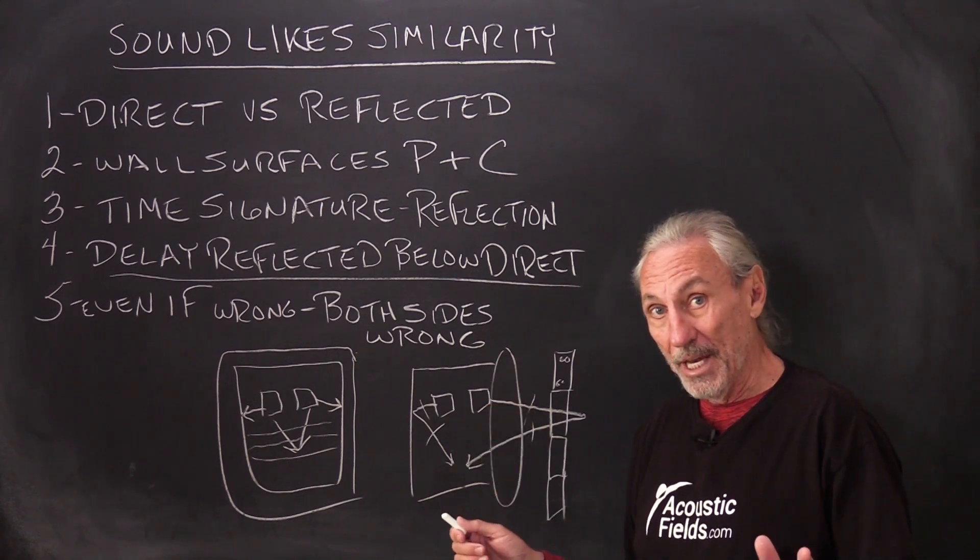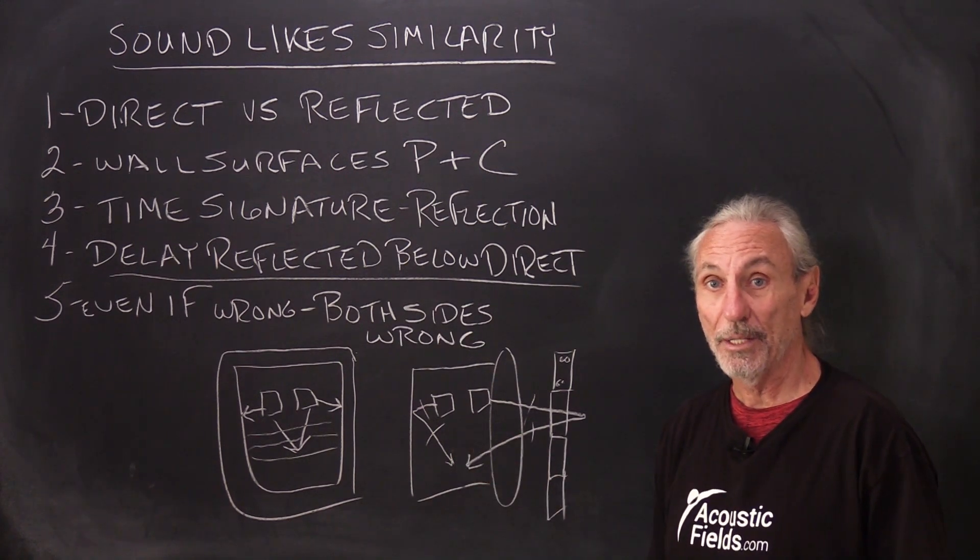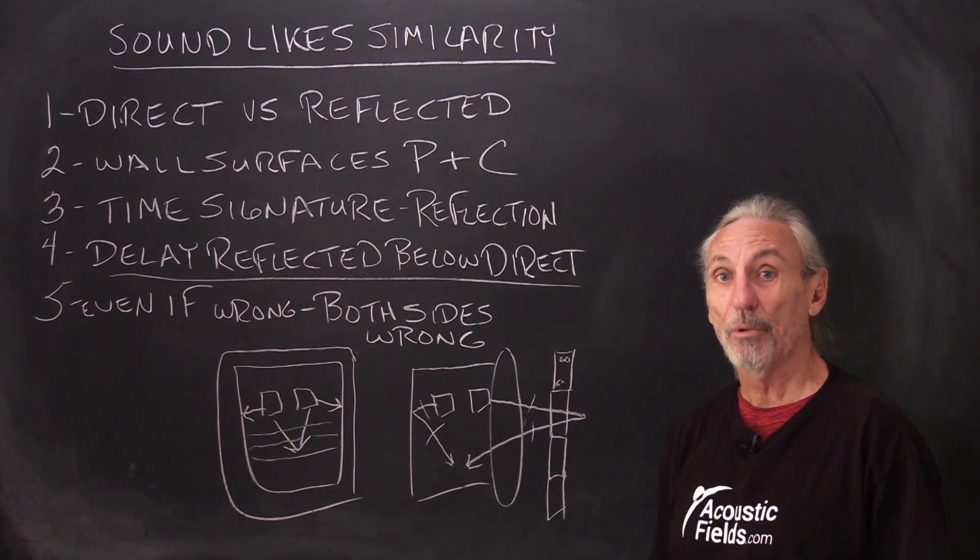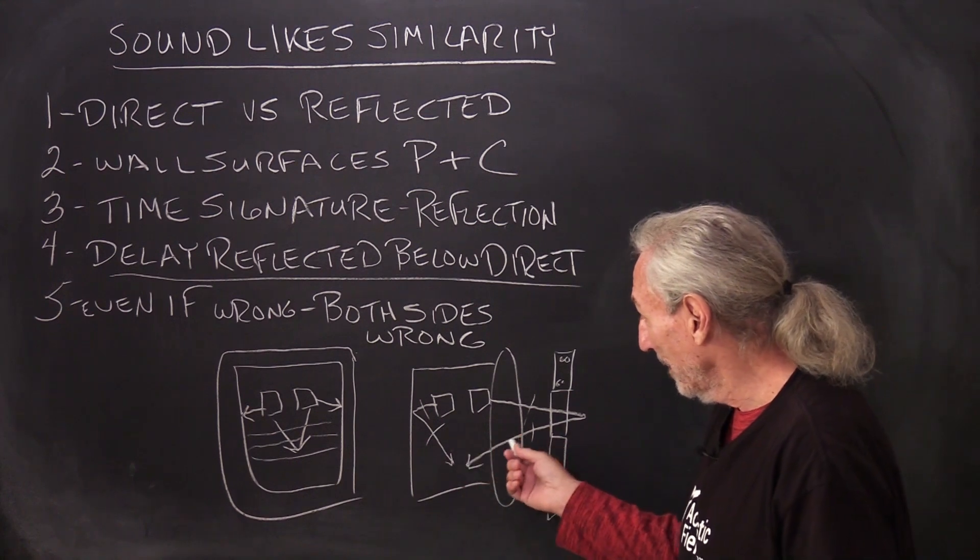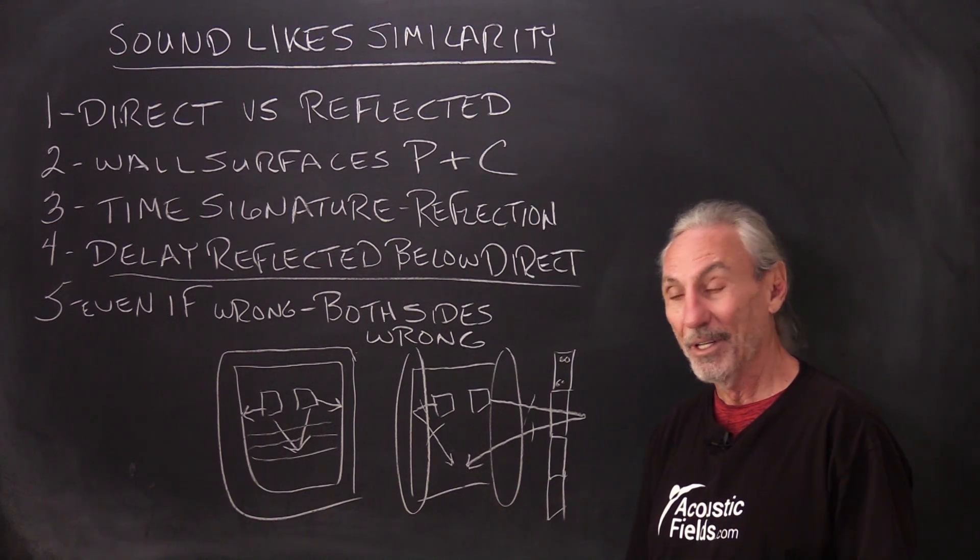I can't believe I'm going to say this, but I'm going to say it anyway. Even if you're going to do something, do it to both sides. And if it's wrong, do it wrong to both sides. In this case here, take out this wall so we have no walls on both sides.